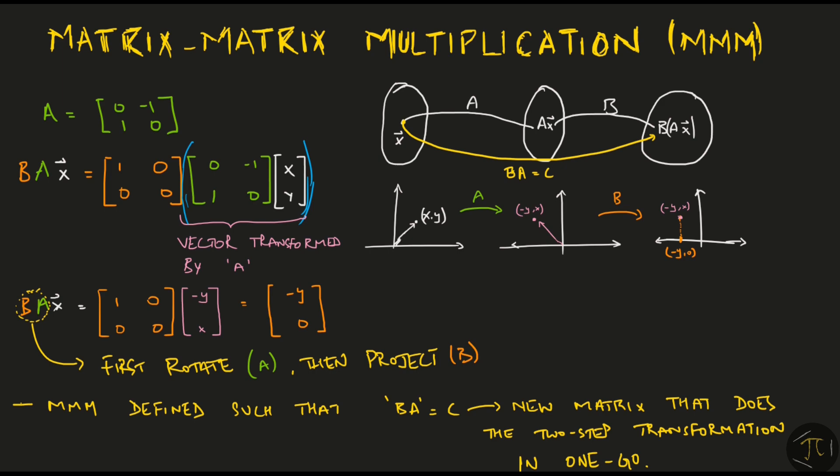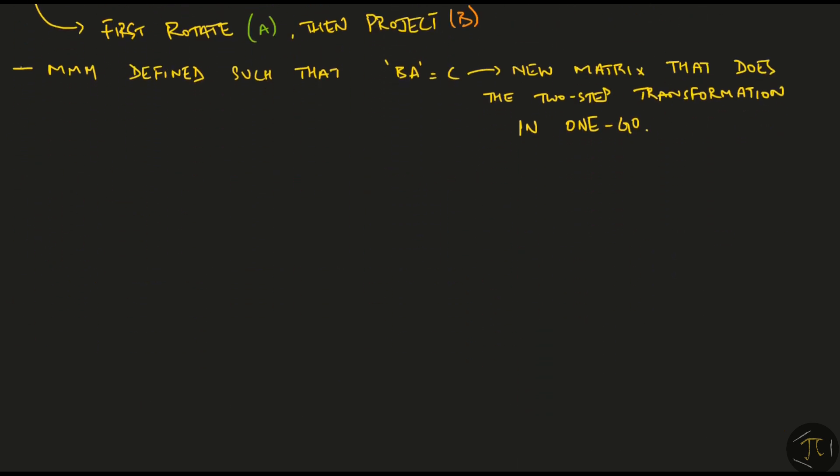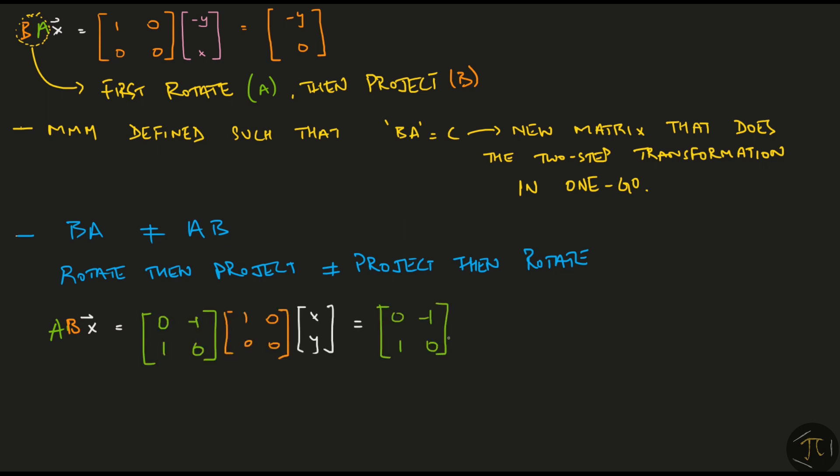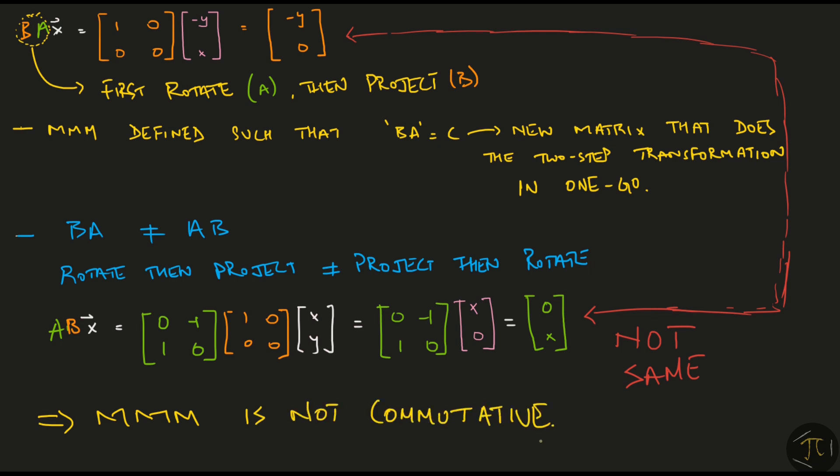Now, looking at matrix multiplication in this way helps us reach the conclusion that generally, B times A won't be equal to A times B. Rotating and then projecting is not the same thing as projecting and then rotating. If we were to calculate ABx in the way we just did BAx, we would find that these two quantities are clearly not equal. Always remember this critical result. Matrix matrix multiplication is in general not commutative.